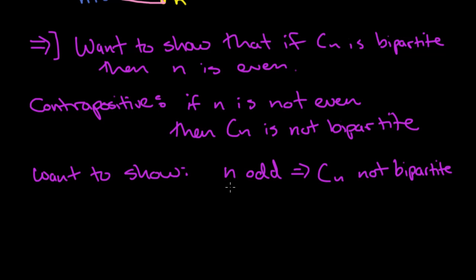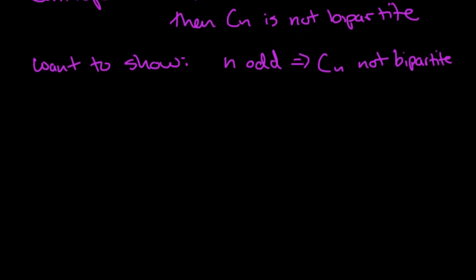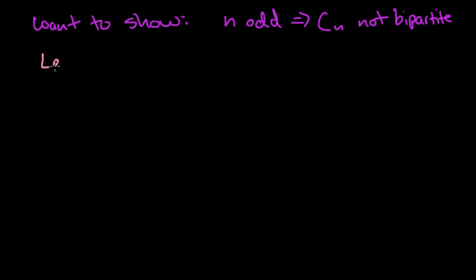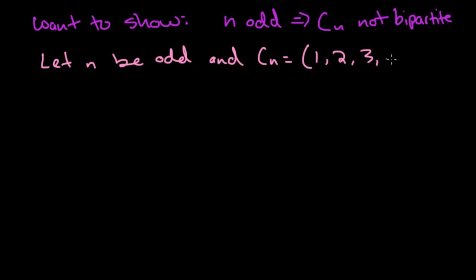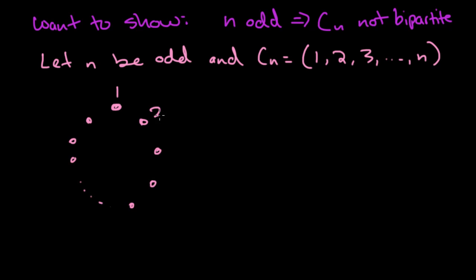This is what we need to prove: if n is odd, the cycle on an odd number of vertices is not bipartite. We'll use that same coloring technique. Let n be odd, and let Cn be the cycle with vertex labels 1, 2, 3, all the way up to n. Let's draw this cycle — it could be large. So this is 1, 2, 3, 4, 5, and we continue; the last vertices are n minus 2, n minus 1, and n.